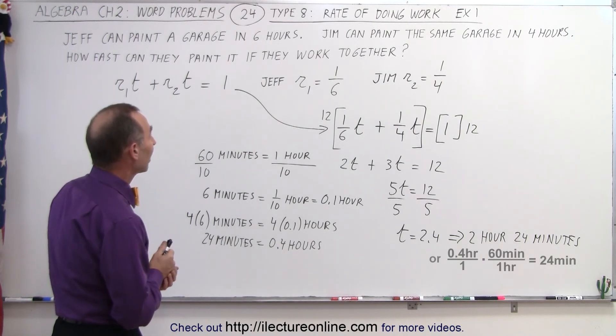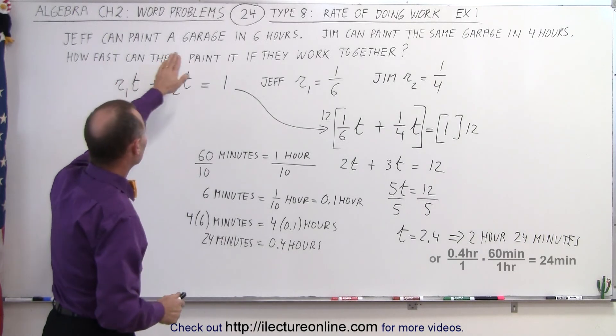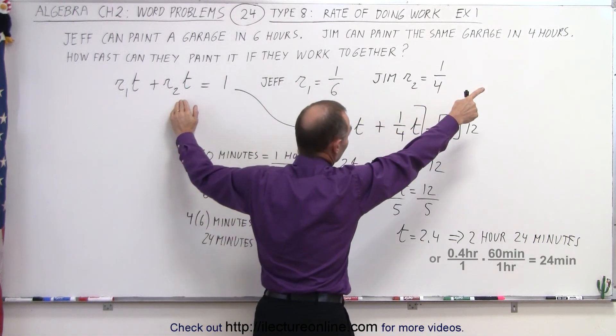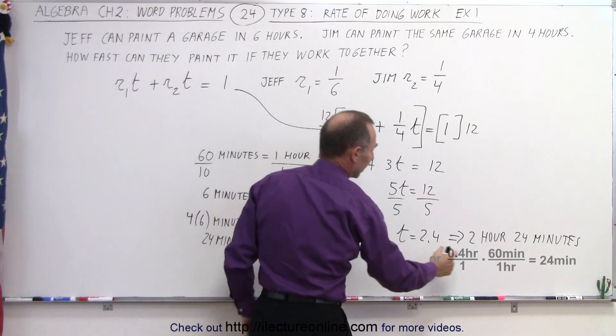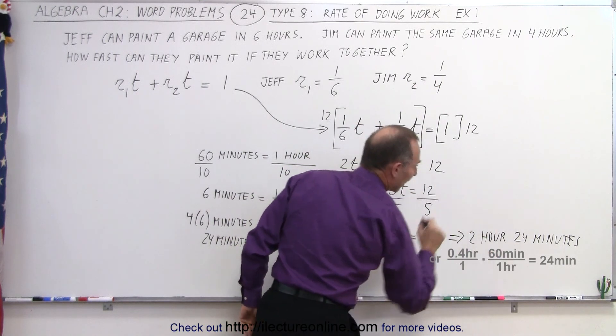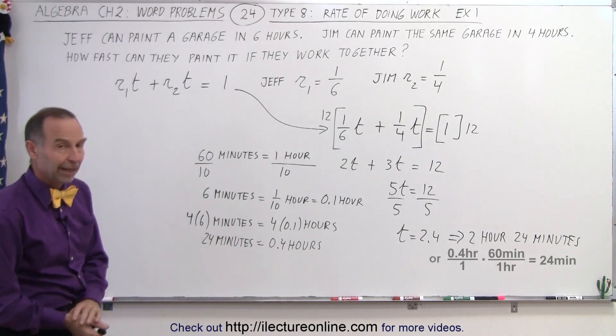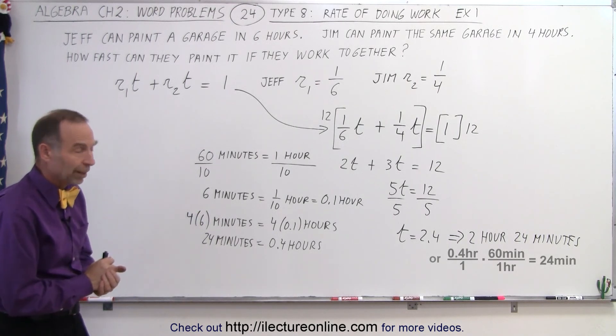Now, what this means is that if Jeff can paint the garage in 6 hours by himself, and Jim can paint the same garage in 4 hours by himself, if they work together, they can paint the garage in 2 hours and 24 minutes. Just a little bit less than 2 and a half hours. And that is how we solve the problem.